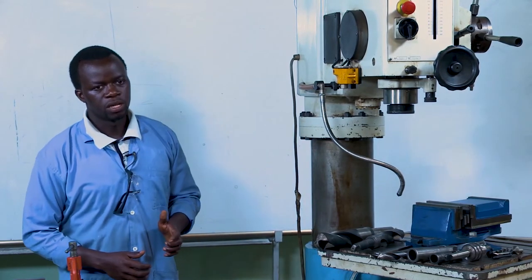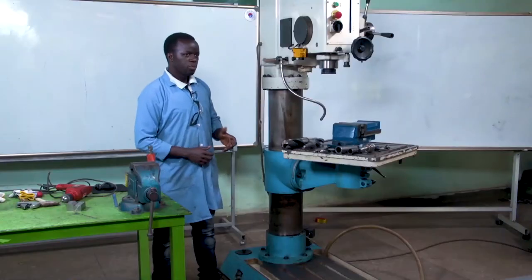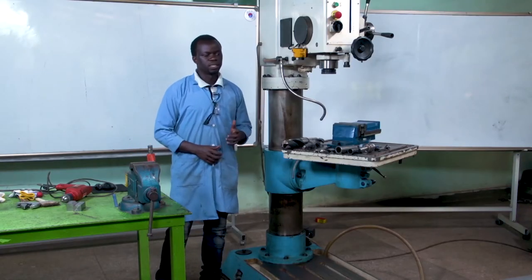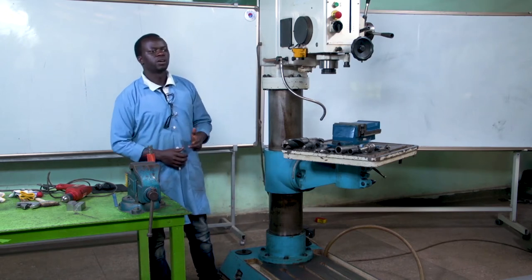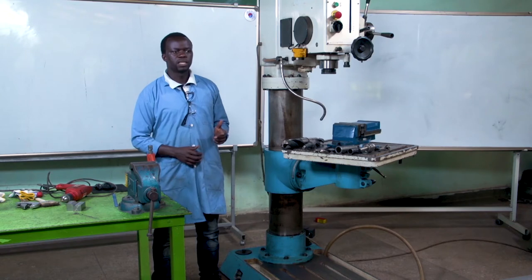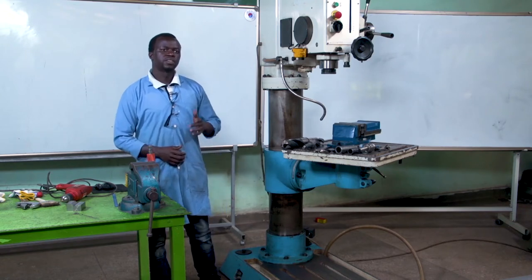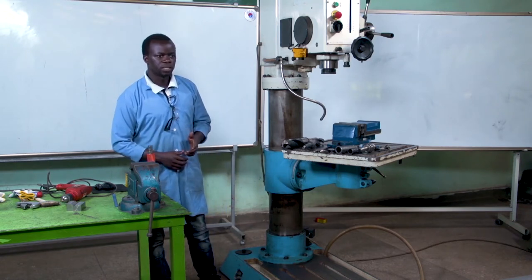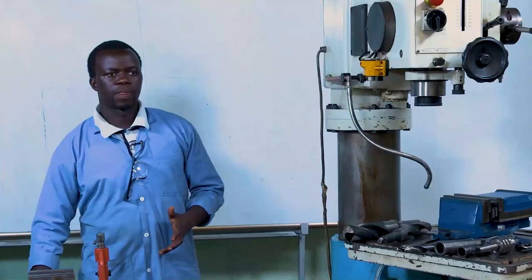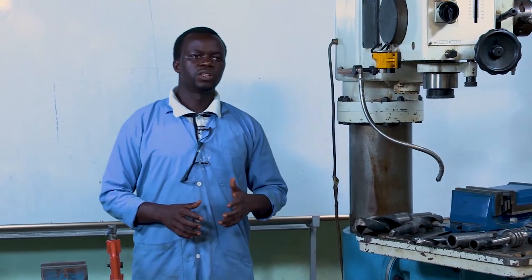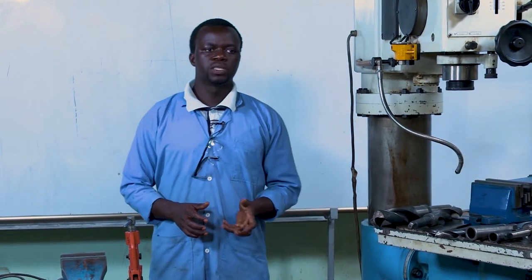We may also have a radial drilling machine. In radial drilling machines we have three types: the plain radial drilling machine, the semi-universal radial drilling machine, and the universal radial drilling machine. We also have the gang drilling machine, the multiple spindle drilling machine, and the automatic drilling machine.